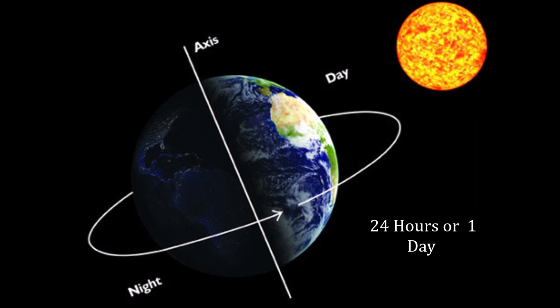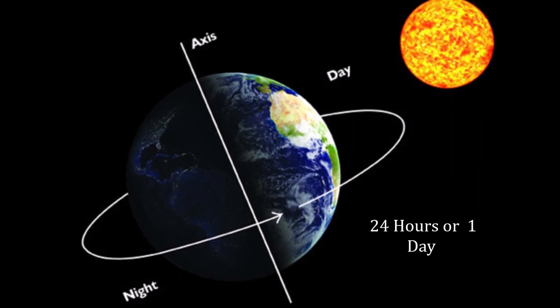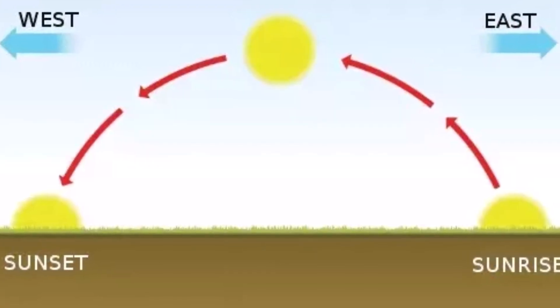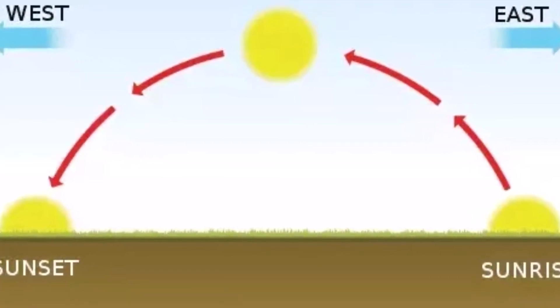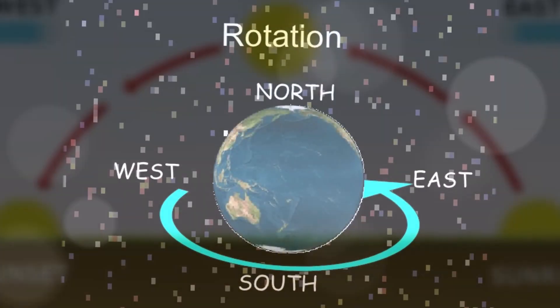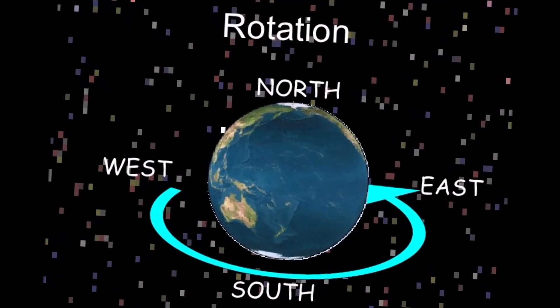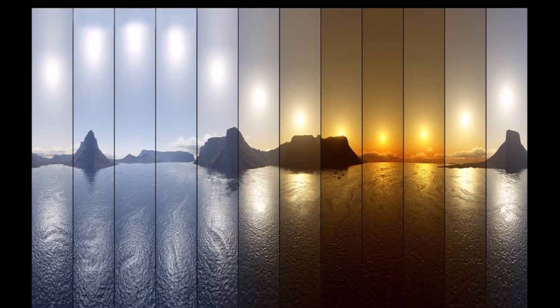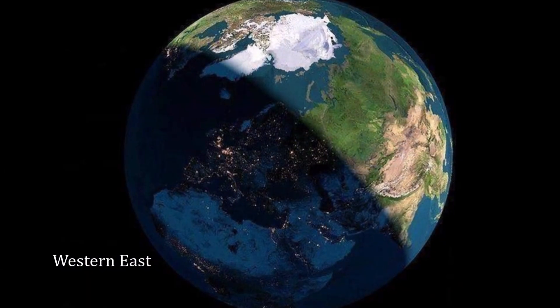As you know, Earth takes 24 hours, that is one day, to complete one rotation. We consider the direction where the sun rises to be east. Thus, Earth rotates from west to east. As a result, we experience sunrise, noon, sunset and midnight. During rotation, the longitudes in the west experience darkness.